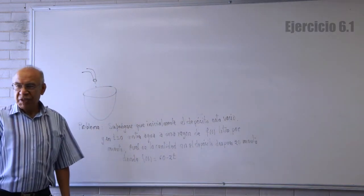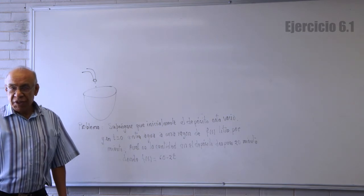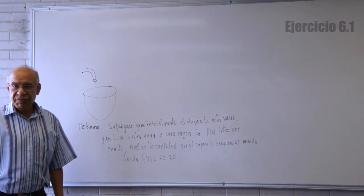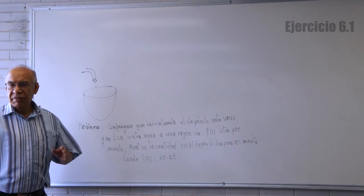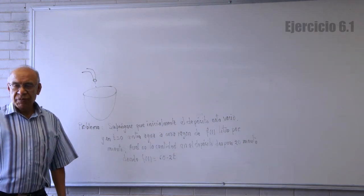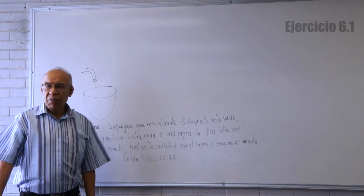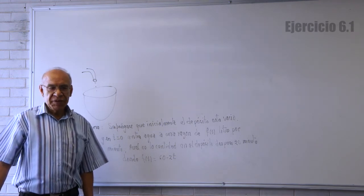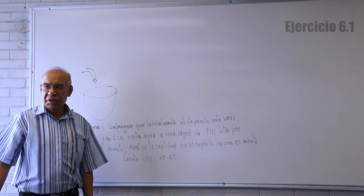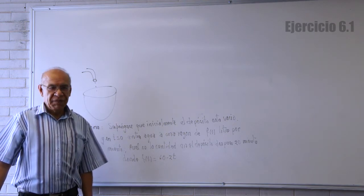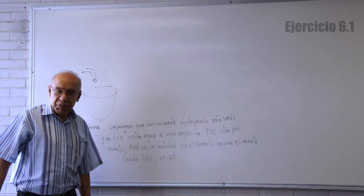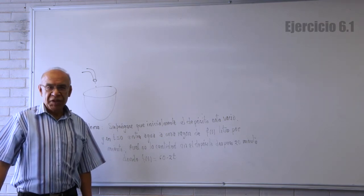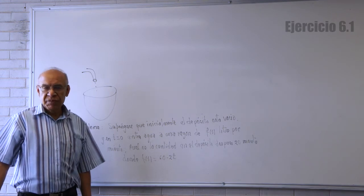Vamos a resolver este problema. Como siempre, empezamos suponiendo que la rapidez con la que entra el agua es constante. Por ejemplo, supóngase que entran 3 litros por minuto. Si entran 3 litros por minuto, ¿cuántos litros habrán entrado después de 2 minutos? 6. Después de 5 minutos, 15. Después de 20 minutos, 60.